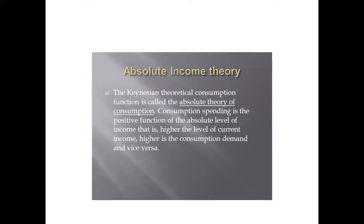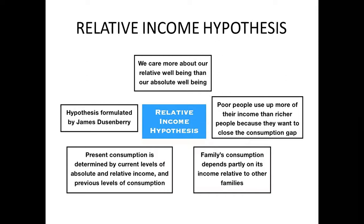Coming to the next theory, this is the relative income hypothesis, given by James Duesenberry. This theory talks about how the consumption pattern is not primarily affected by the level of income, but by peer pressure — the people who are around you. When we see people having good things that we do not own, we get influenced by them and try to have those things in our lives. For example, if one of your friends purchases a new mobile phone while you are using an old one, you immediately feel the urge to buy a new one. This is how the relative income hypothesis works.